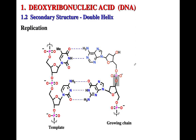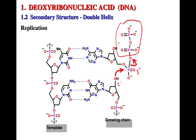This is of particular interest because if you have a group that blocks or prevents binding — if you replace this hydroxyl group with a group that is not capable of engaging in these interactions or being recognized by the enzyme — you can actually stop DNA replication.